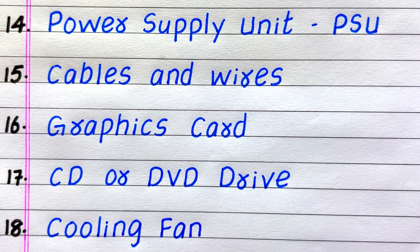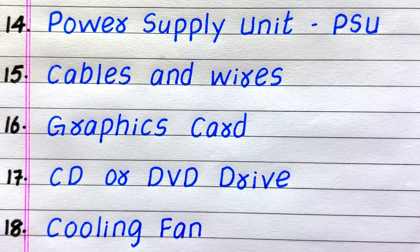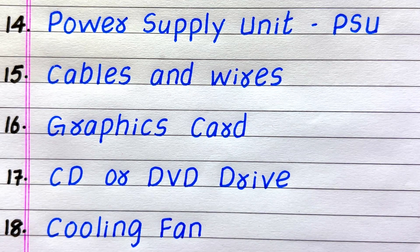14th basic part of a computer is Power Supply Unit. 15th, Cables and Wires. 16th, Graphics Card. 17th, CD or DVD Drive. 18th, Cooling Fan.